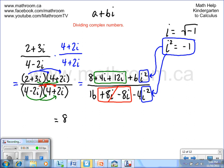On the top, we have 8 plus 4i plus 12i is plus 16i. And we have plus 6 times minus 1. In the denominator, we have 16 minus 4 times minus 1, because we're going to exchange that i squared for minus 1.